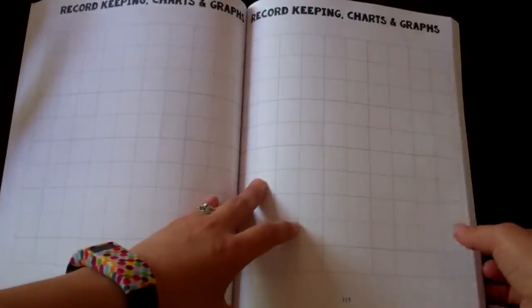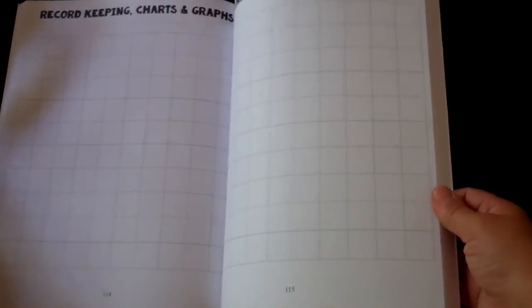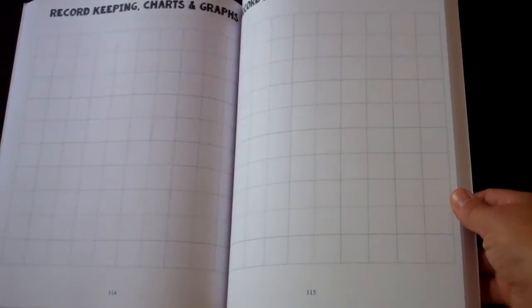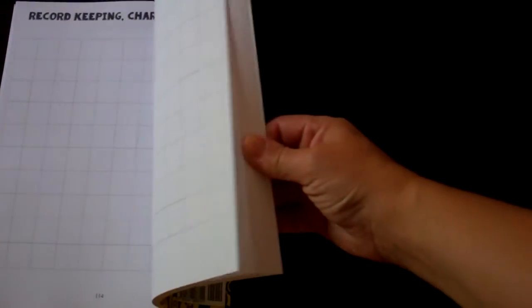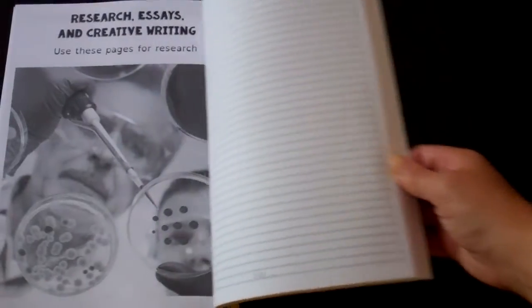Then, onto record-keeping charts and graphs. We've got some math worked in. Apologize, something's casting a shadow over there. As you saw, our house is in a little bit disarray.